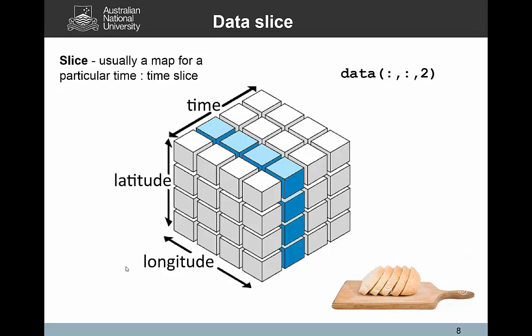We can also slice, and that's usually a map for a particular time, and we tend to call it time slice. Here's an example of that. Instead of what we saw before, we said we want all the cells in the latitude domain, all the cells in the longitude domain, and then we want the second time, the second period, or the second time step in the temporal domain.